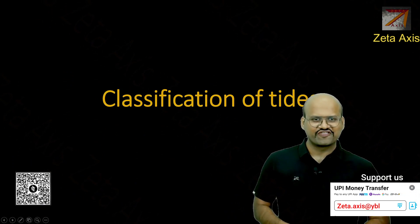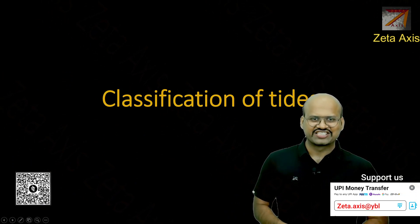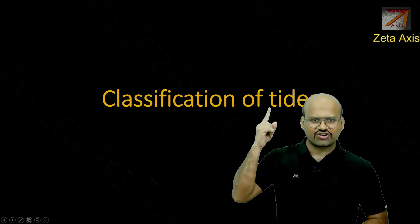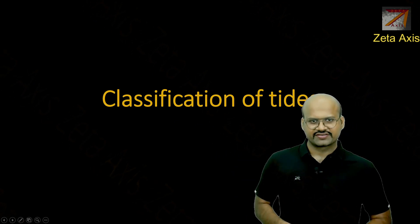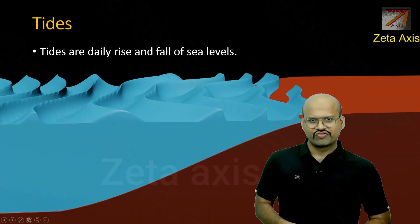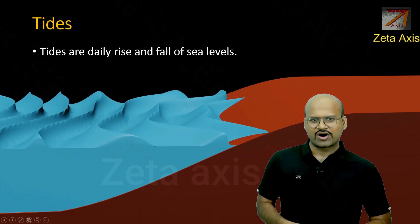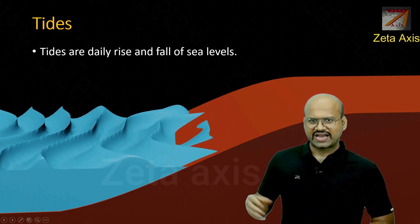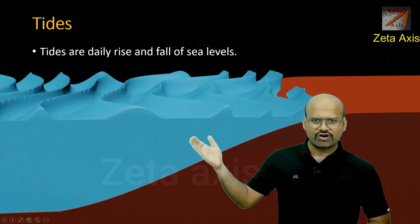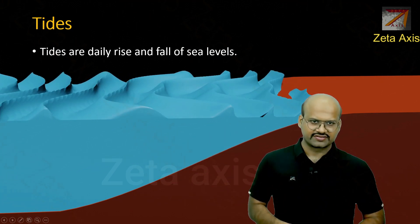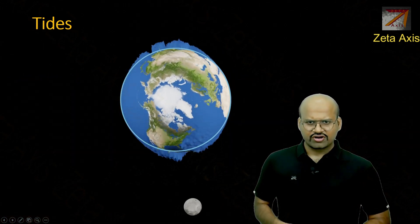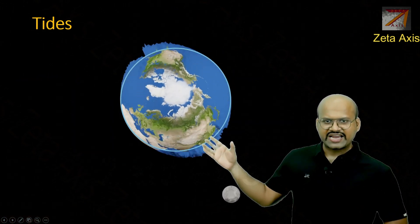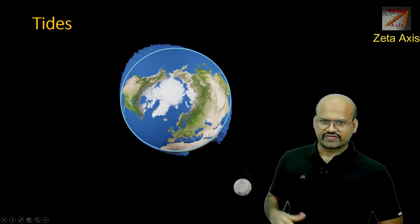Hello friends, welcome to another video of Zeta Axis. Today we are going to study about classification of tides. In our previous video we discussed about what are tides — we saw that tides are periodic rise and fall of sea levels, and how moon and sun affect the tides on the surface of our earth.